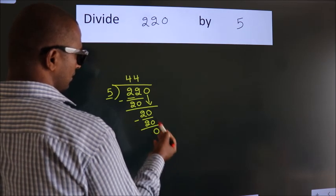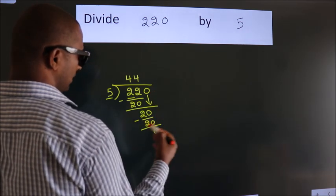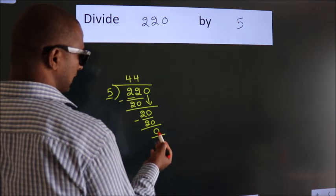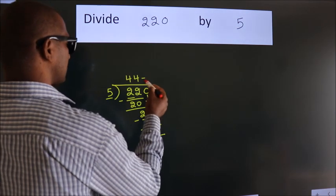After this, no more numbers to bring down. And we got remainder 0. So this is our quotient.